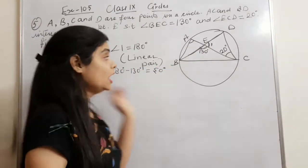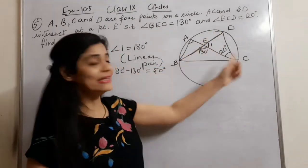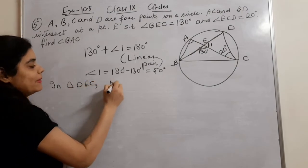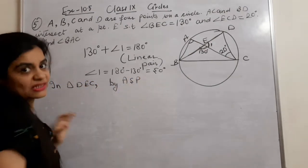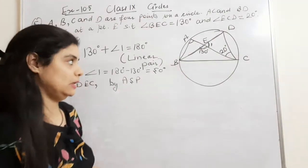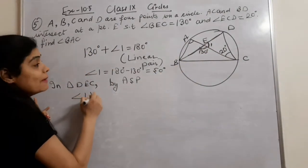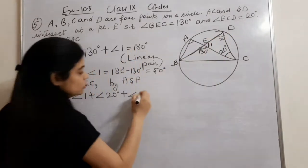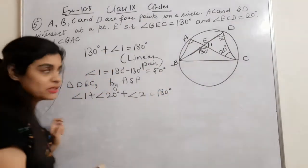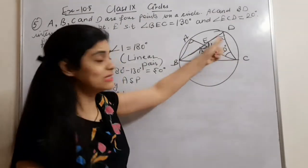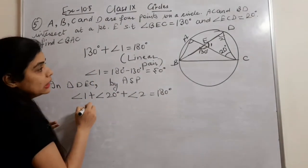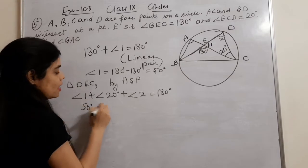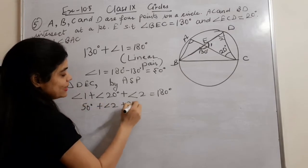I can find angle 1 easily: 180 minus 130 degrees equals 50 degrees. Now if I look at triangle DEC and apply the angle sum property, the sum of all angles of a triangle is 180 degrees. So angle 1 plus 20 degrees plus angle 2 equals 180 degrees.